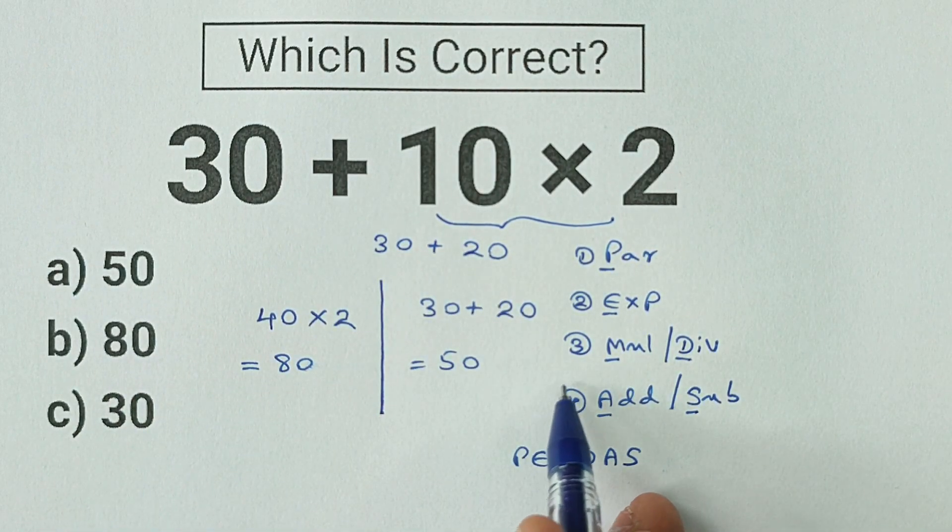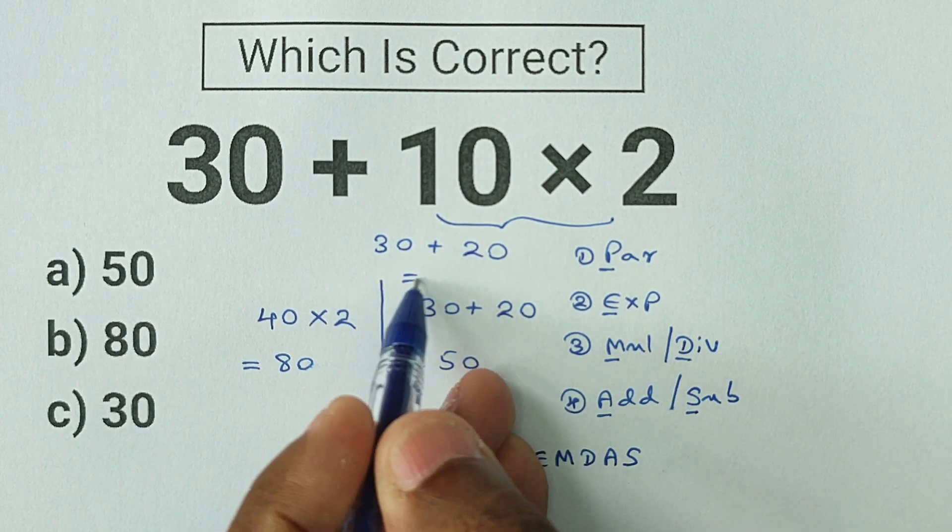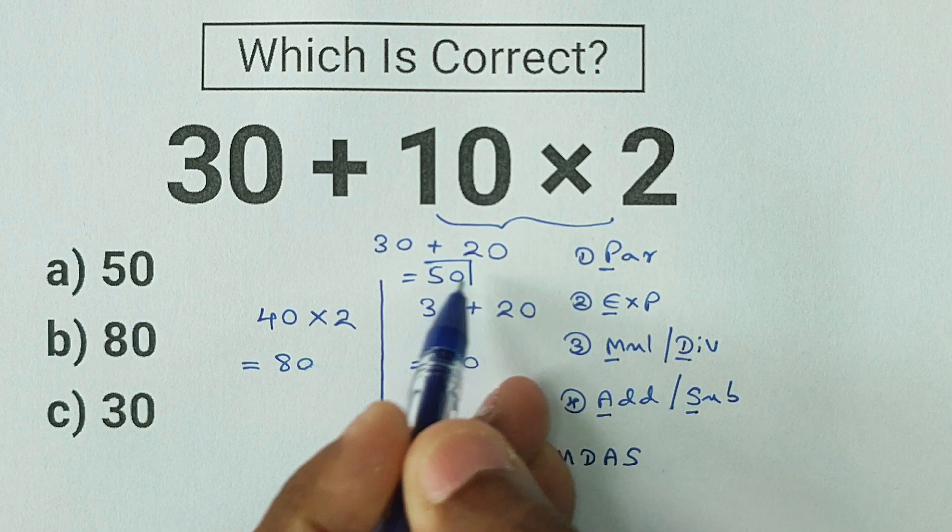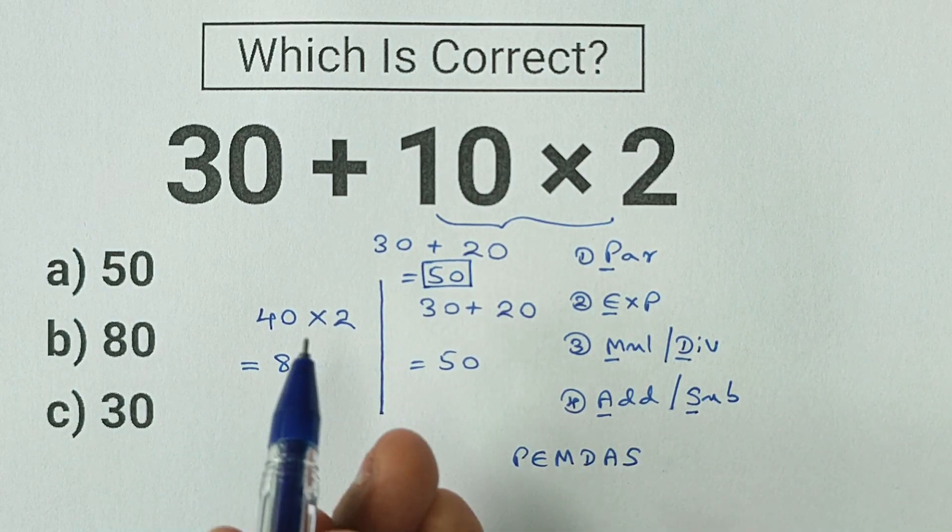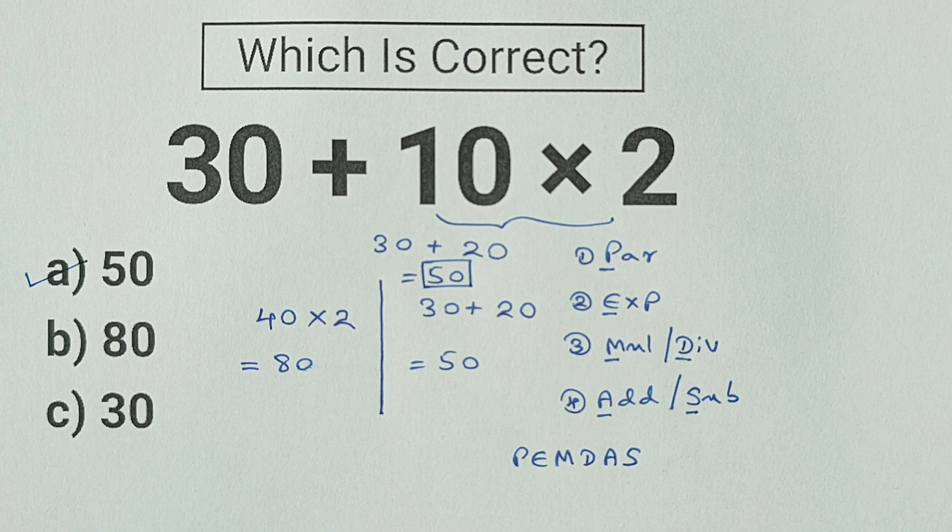Now we can move on to our last order of operation, adding and subtracting. 30 plus 20 is equal to 50. So our final answer for this expression is equal to 50. So option A is the correct answer.